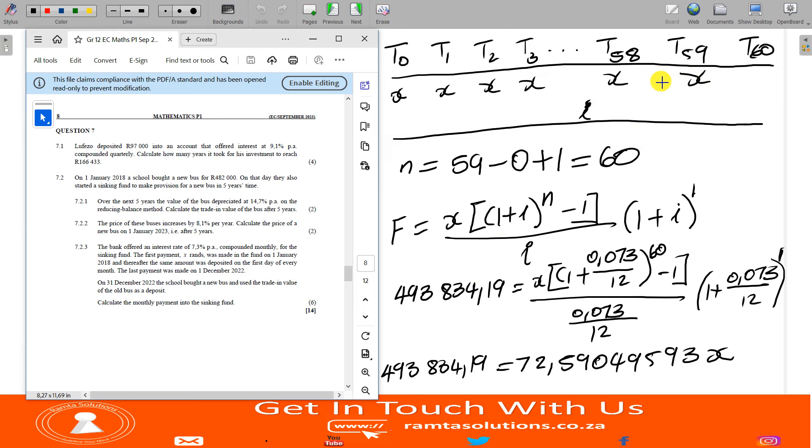This is how you attempt your finance questions. And remember, this question you should be spending 14 minutes. If you say you were slow, at least spend 3 minutes extra, maybe 17. But if you find that you spend more than 17, you must know that you are in trouble. Move on to the next question, you will come back later. Try to do the questions that are super easy for you and then come to the ones that are giving you a tough time.